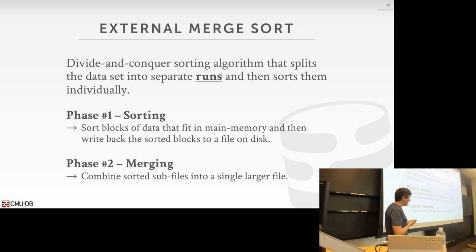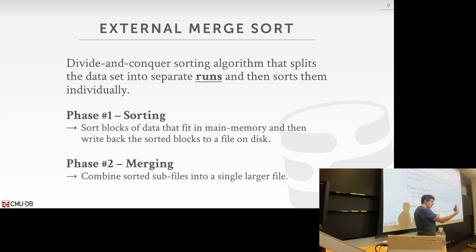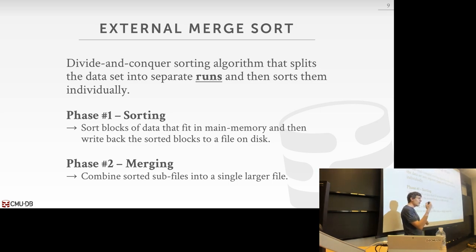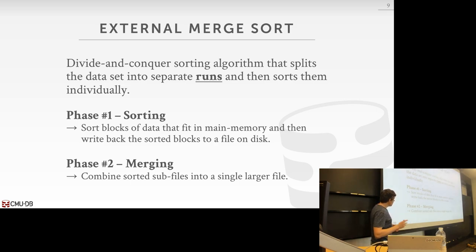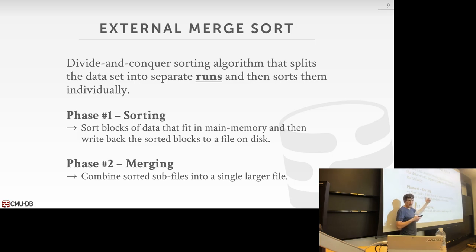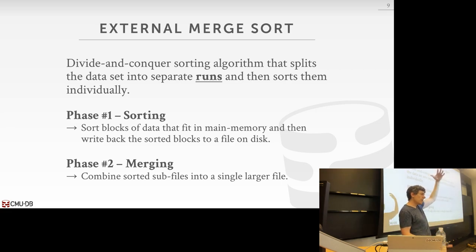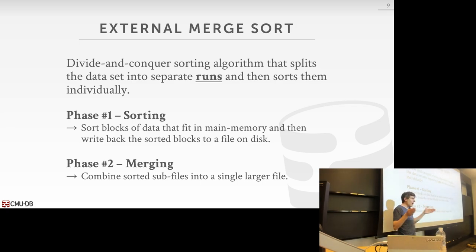External merge sort is a divide-and-conquer approach where we split the dataset we want to sort into smaller chunks called runs. All keys within a given run are sorted, and runs are disjoint subsets of the entire key set. We sort these little runs, then start combining them into larger sorted runs, and keep doing this until we have the full dataset sorted. There are two phases: in phase one, we take as many blocks as fit in memory, sort them, and write them back to disk. In phase two, we combine the sub-sorted runs into larger sorted runs and write them out, repeating until everything is sorted — potentially requiring multiple passes through the dataset.